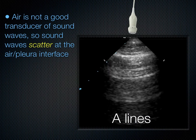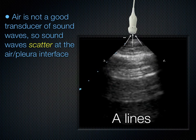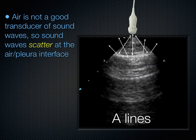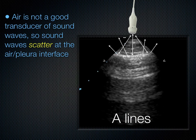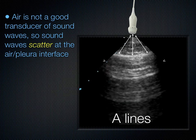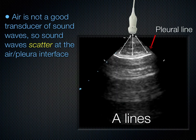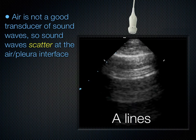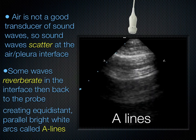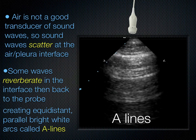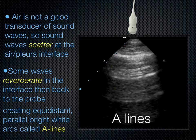Here's another representation of that concept. Air is not a good transducer of sound, so sound waves will hit the pleural line and scatter when there's air on the other side. Some of those scatter waves reverberate back to the interface and are then reflected as a repetition of that pleural line deeper.